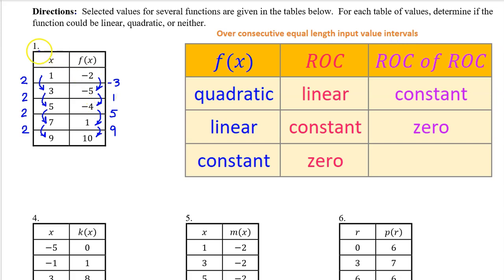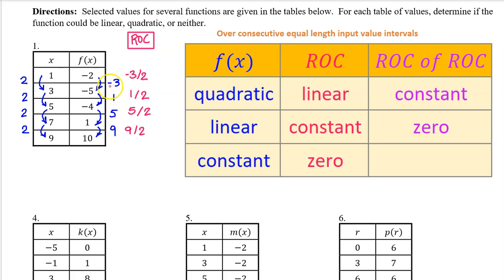For number 1, these are the changes in the output values and these are the changes in the input values. Notice that we have consecutive equal-length input value intervals. The average rate of change for each interval is negative 3 over 2, 1 over 2, 5 over 2, and 9 over 2. Because the rate of change is not constant, we know that the function is not linear.